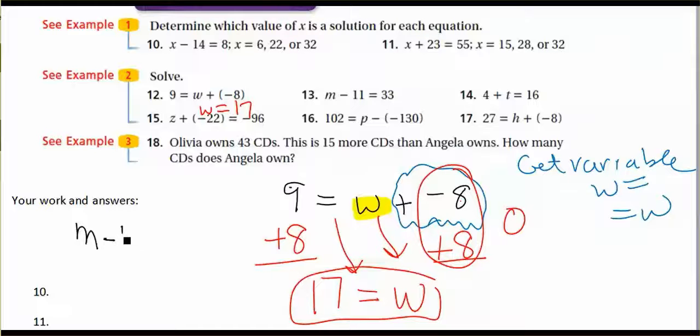Alright, just starting number 13 here. We have M minus 11 equals 33. What is the variable? The variable is M. I like to highlight it or underline it or mark it somehow. And then you think to yourself, what is being done to the variable?